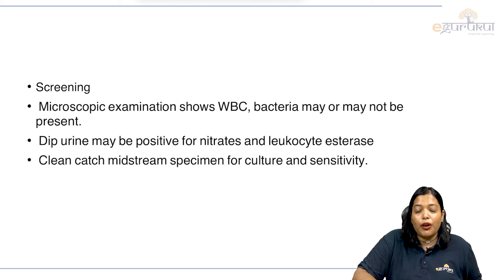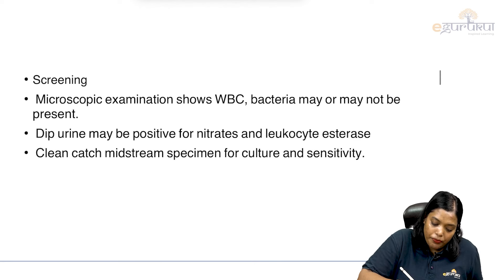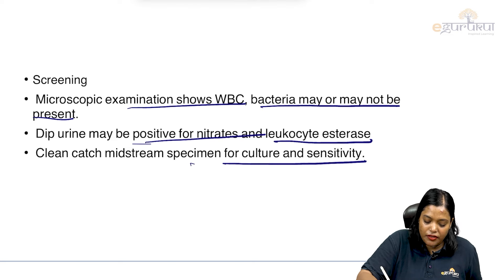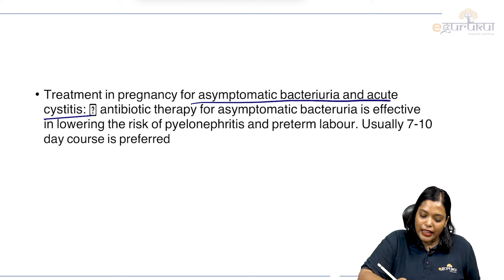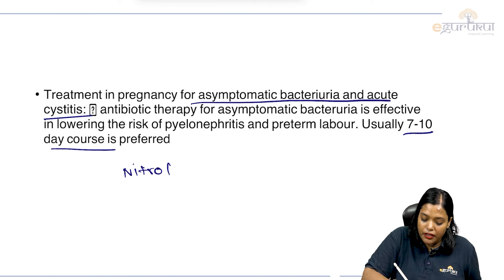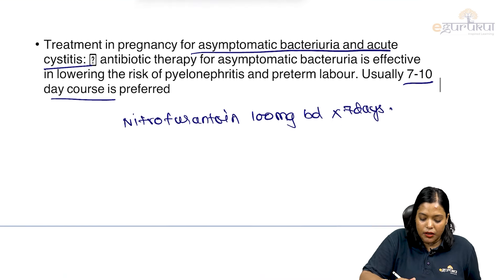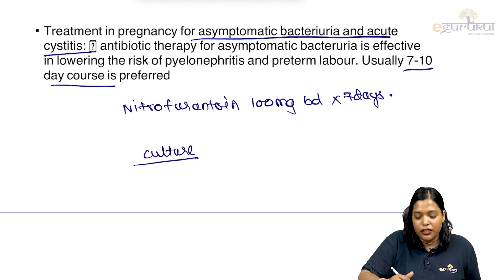For screening, we do urine routine microscopy and urine culture every trimester. Microscopic examination shows WBC; bacteria may or may not be present. Dipstick urine may be positive for nitrites and leukocyte esterase. A clean-catch midstream sample for culture and sensitivity should be taken. Treatment for asymptomatic bacteriuria and acute cystitis is antibiotic therapy for 7 to 10 days — usually nitrofurantoin 100 mg BD for 7 days, though culture-directed treatment is preferred.